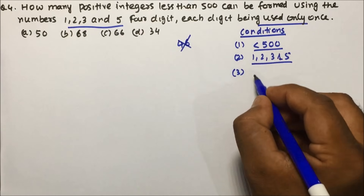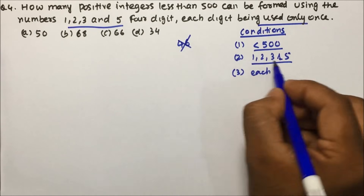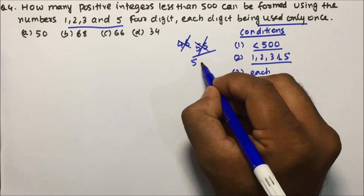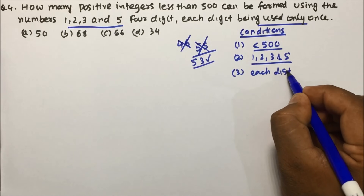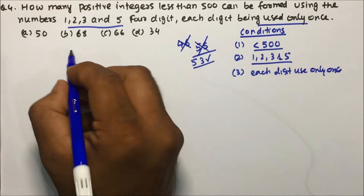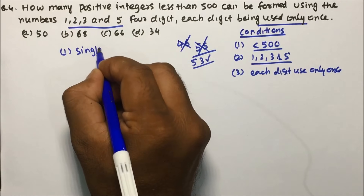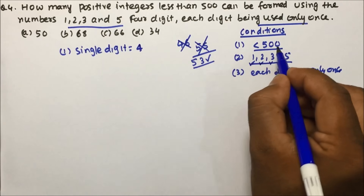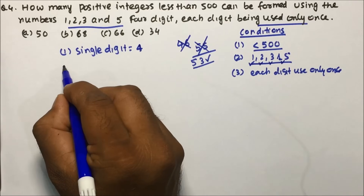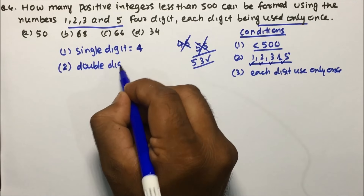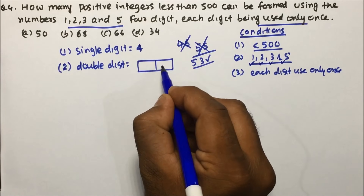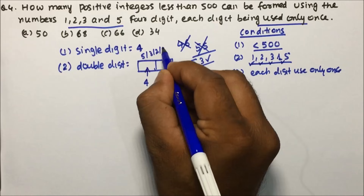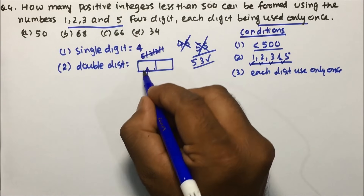Each digit must be used only once. For single-digit numbers: 1, 2, 3, 5 — all four are less than 500, so there are 4 single-digit numbers. For double-digit numbers: we have 4 options for the first place and 3 remaining options for the second place, giving 4 × 3 = 12 double-digit numbers.